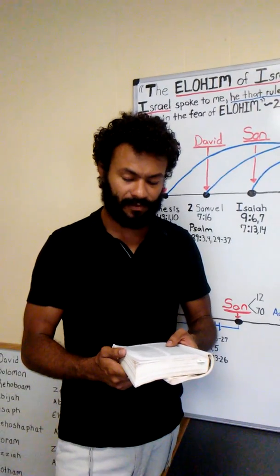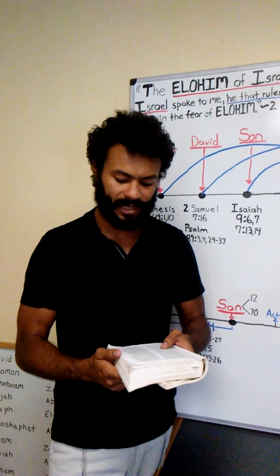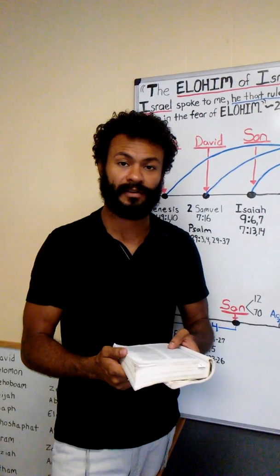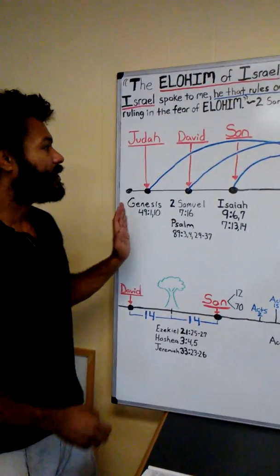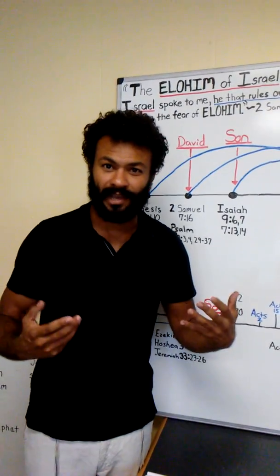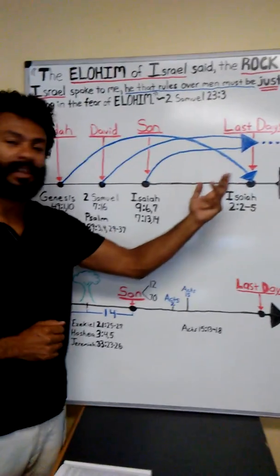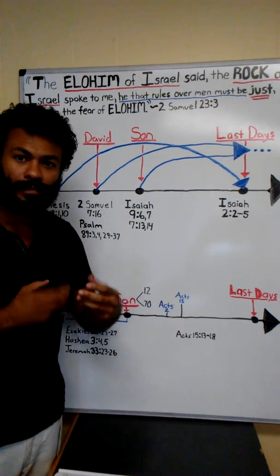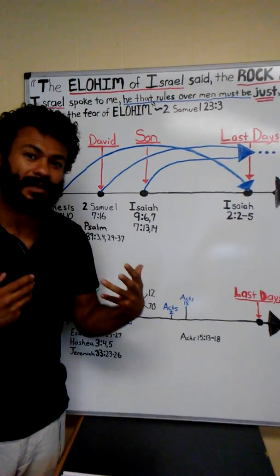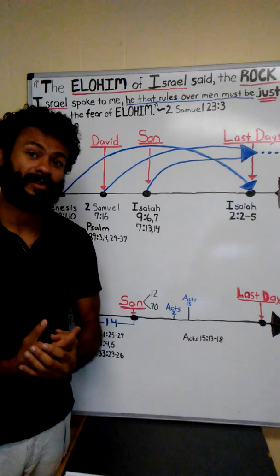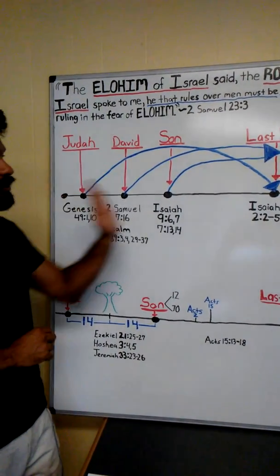Verse 10: The scepter shall not turn aside from Yehudah, nor a lawgiver between his feet, until Shiloh comes, and to him is the obedience of the peoples. This is very important because Shiloh is tied into the coming Messiah, the coming one that's going to bring peace. This king of peace is going to come, and this will be the obedience of the peoples, or the gathering together of the peoples.